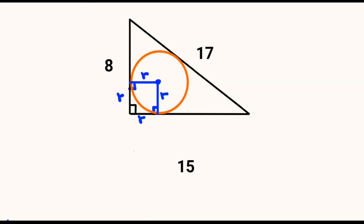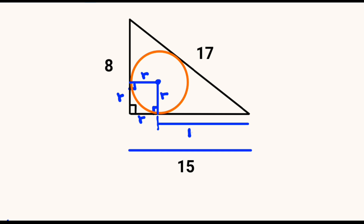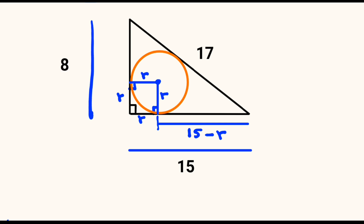The adjacent is equal to 15. We expect that length to be equal to 15 minus r. And if the opposite is equal to 8, that length will also be equal to 8 minus r.